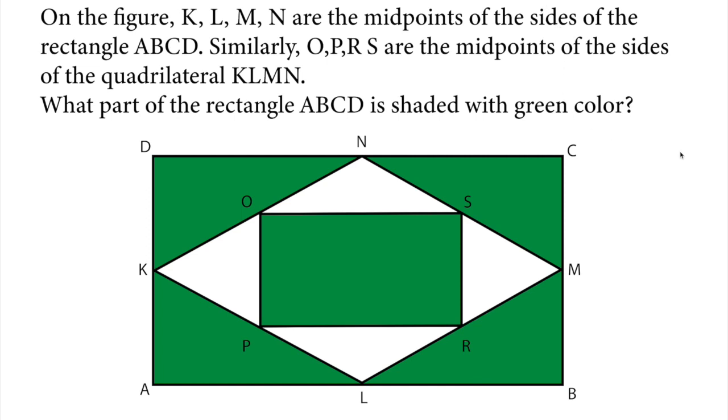On the figure K, L, M, N are the midpoints of the sides of rectangle A, B, C, D. Similarly, O, P, R, S are the midpoints of the sides of quadrilateral K, L, M, N.